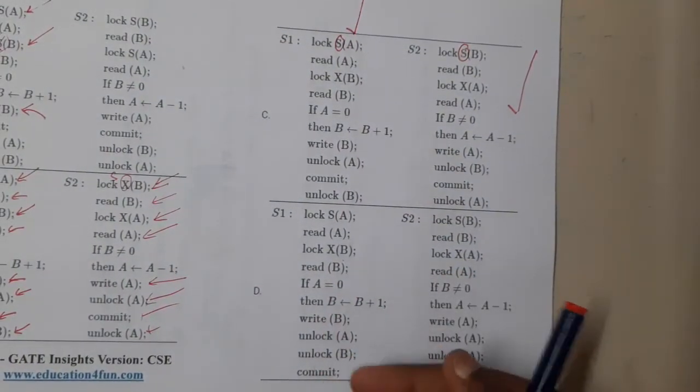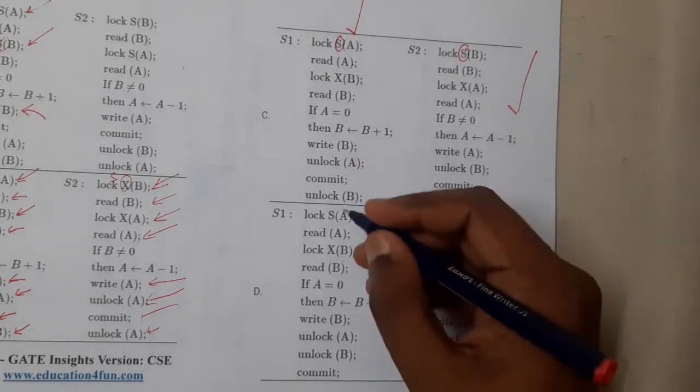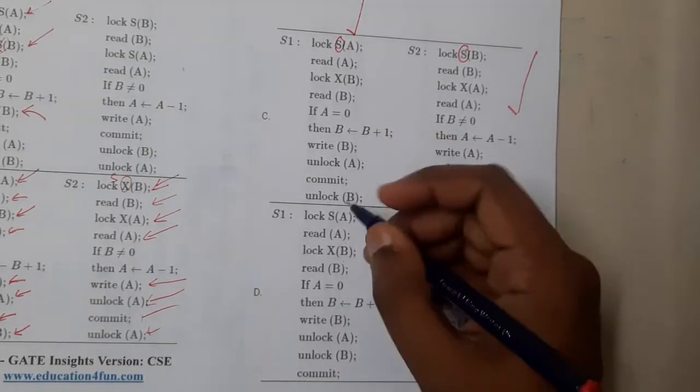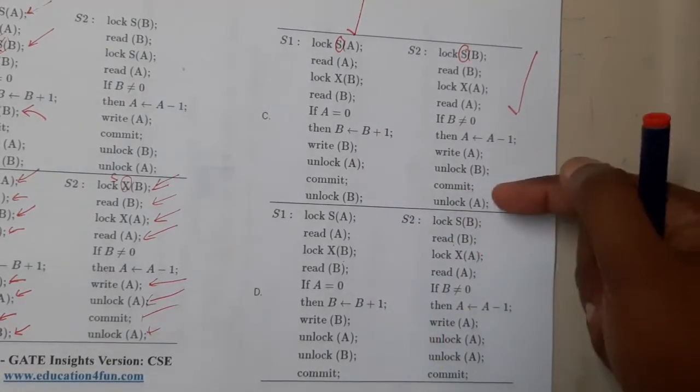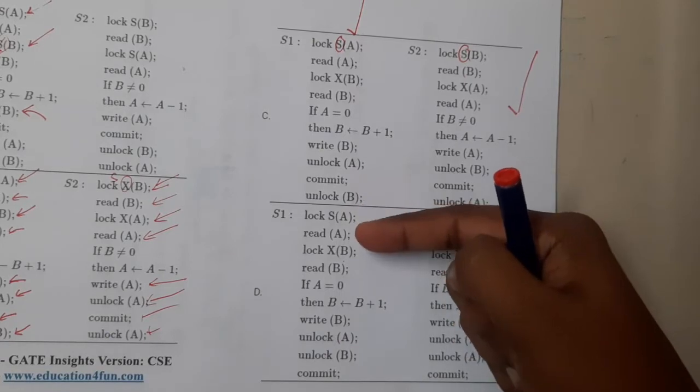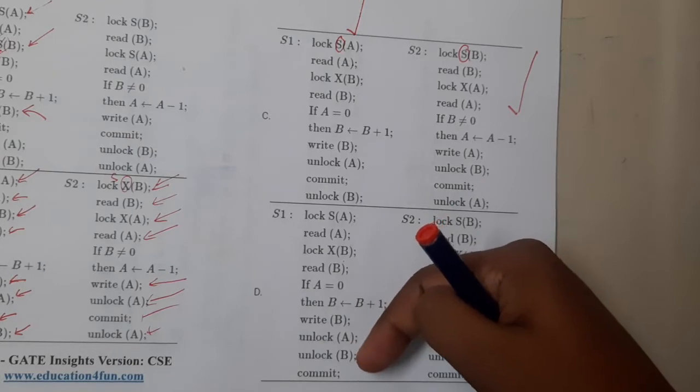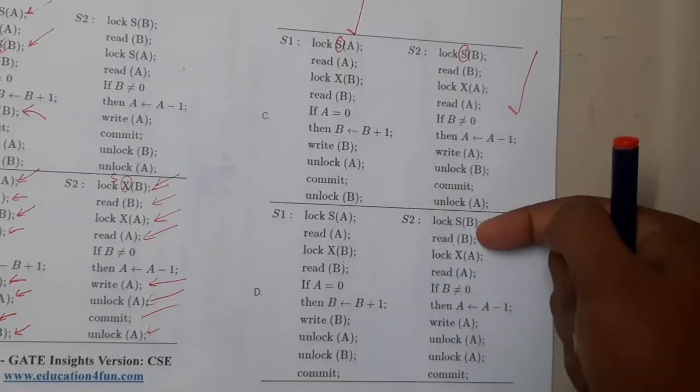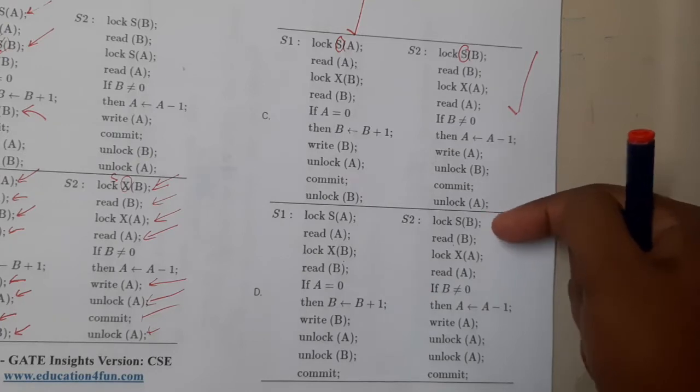Now let us go through this. What is the difference between these two? Let us concentrate. I think the only the commit order is changed. Shared lock A, exclusive lock B, A equal to that condition then we are writing it, then unlock A, unlock B, commit. Exclusive lock A, shared lock B...